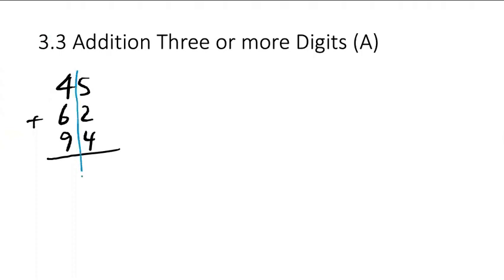So a line here. We can go 5 plus 2 plus 4, that is the right column. And then 4 plus 6 plus 9, that is the left column.